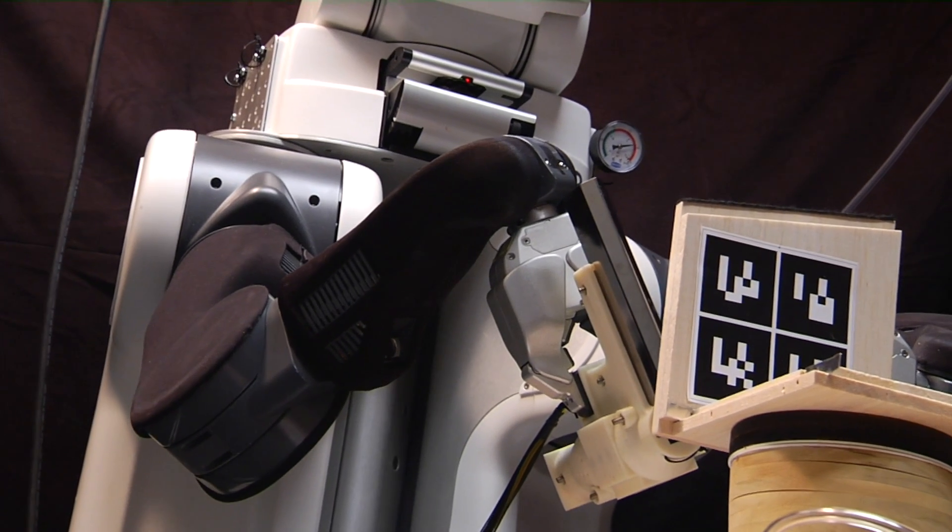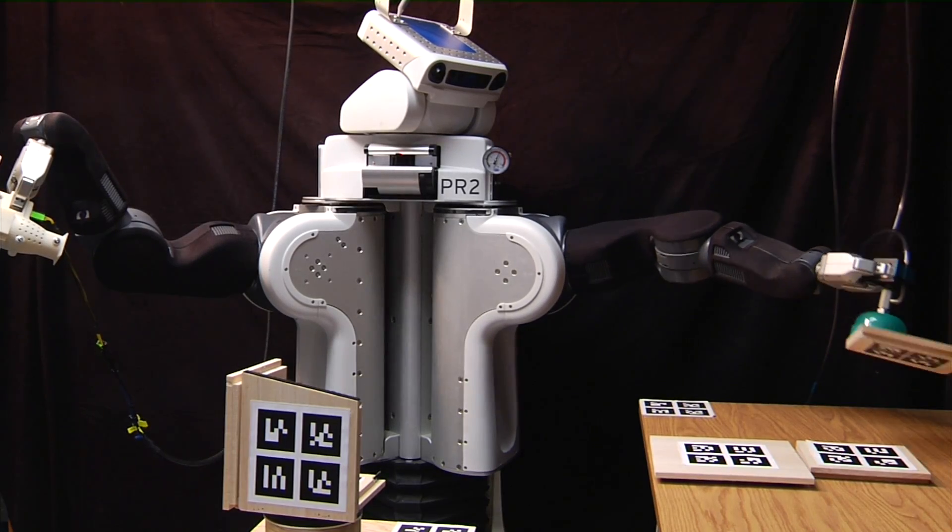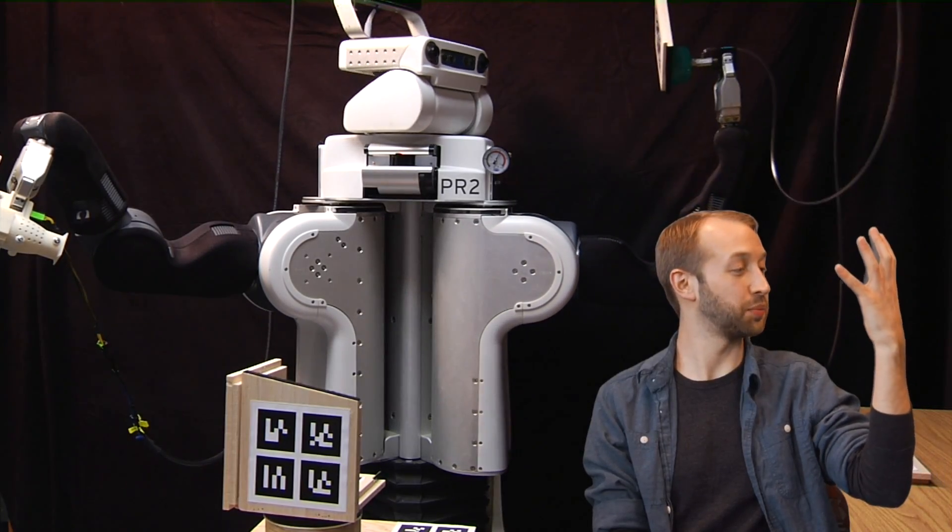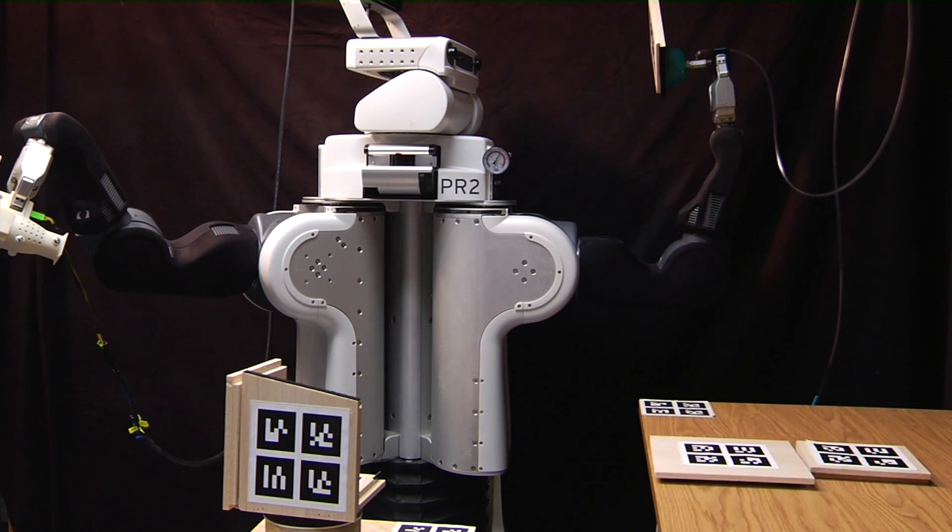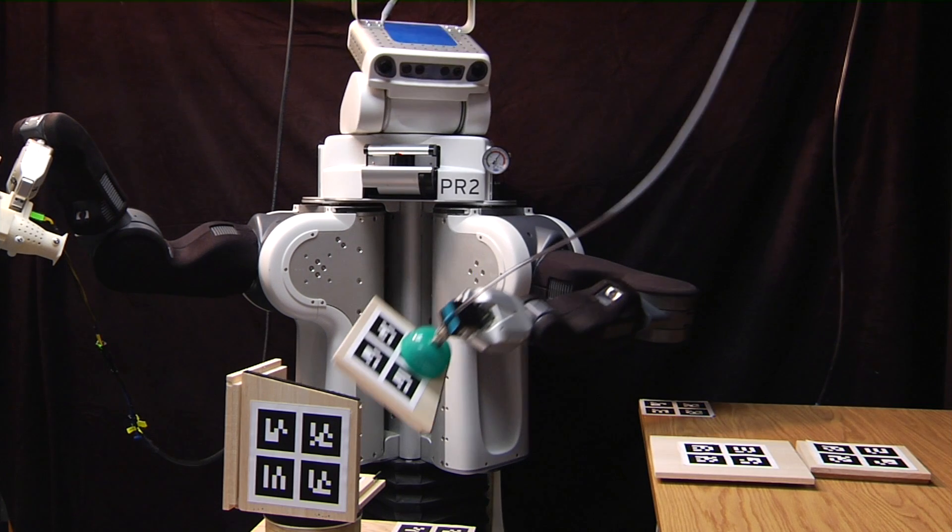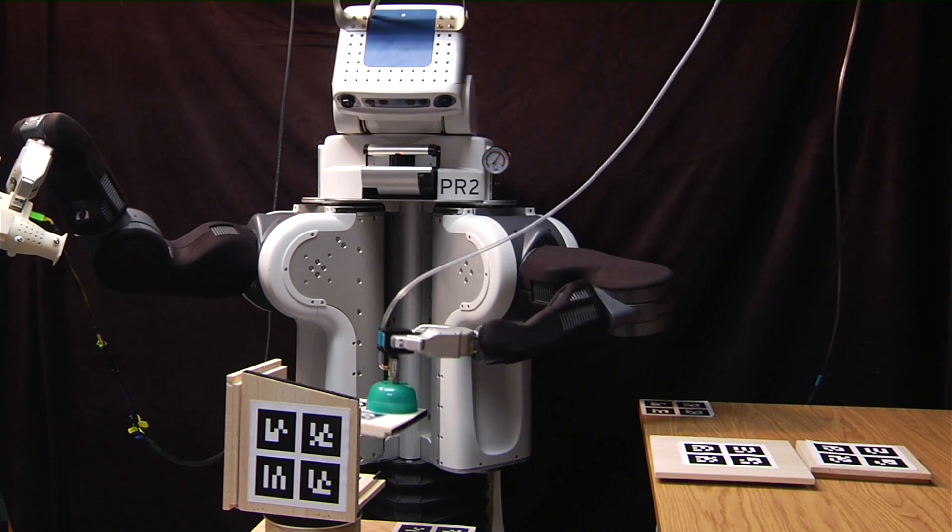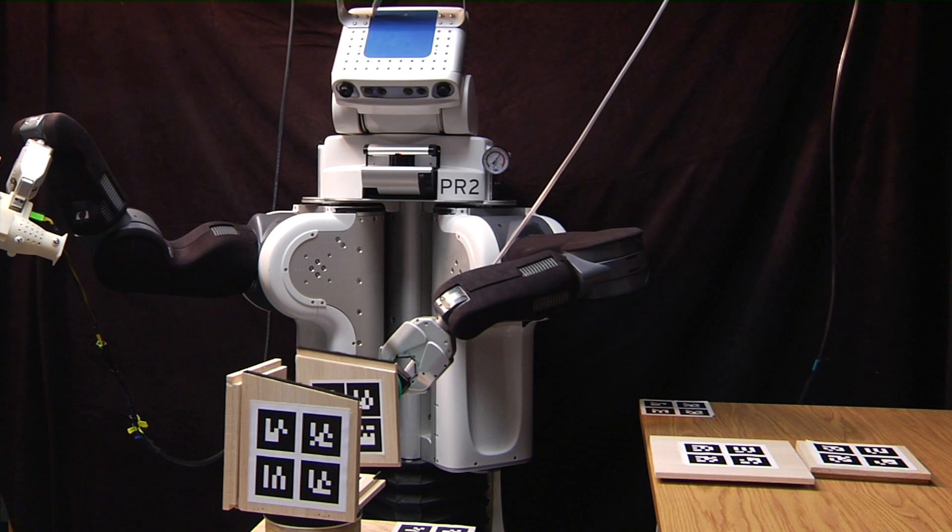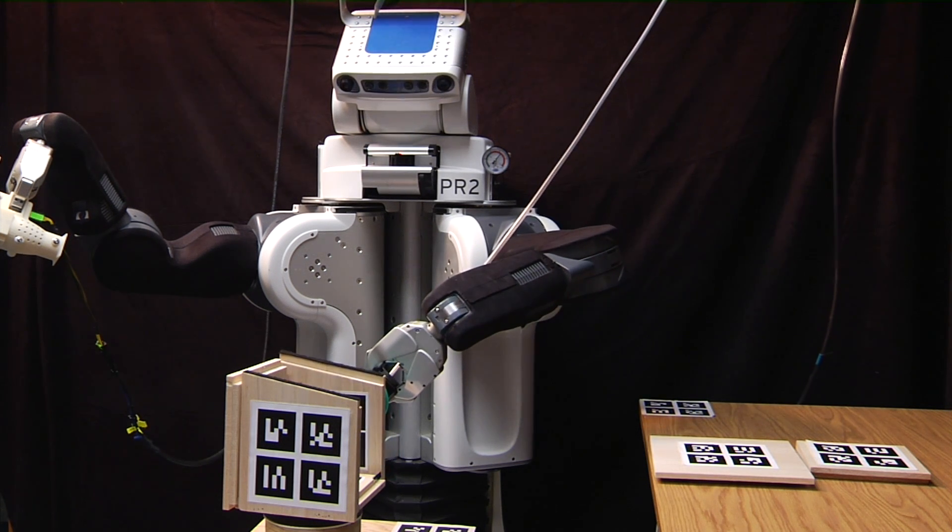Every time the robot picks up a piece from the table you'll notice that it puts it in front of its face to look at it. This is because when the robot goes to pick up the piece there's some error in how it picks up. It might not pick it up exactly the way it wanted to. It then brings it close to its cameras in order to see the error in how it might have picked it up.